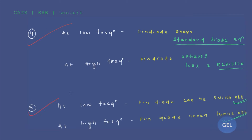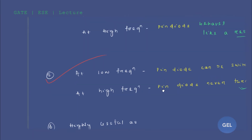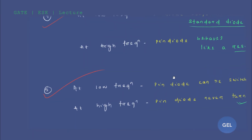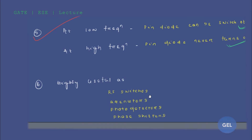These two points are exam-important — remember them. The PIN diode is highly useful as RF switches, attenuators, photo detectors, and phase shifters.